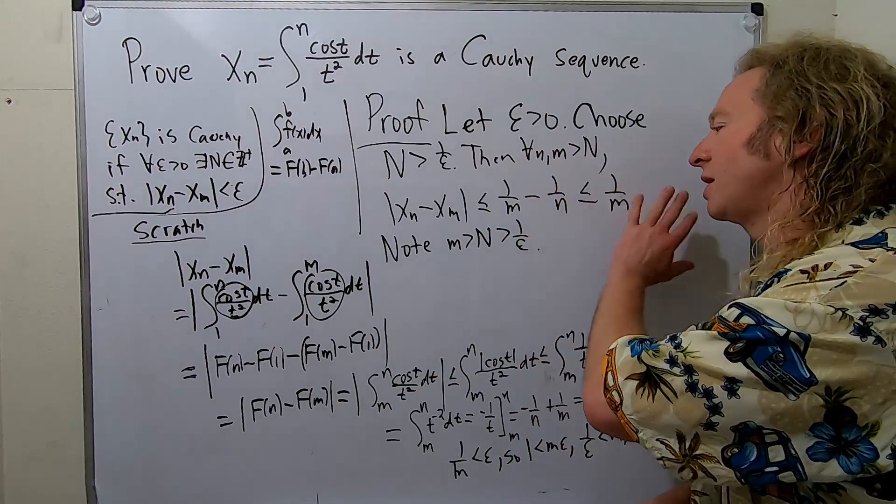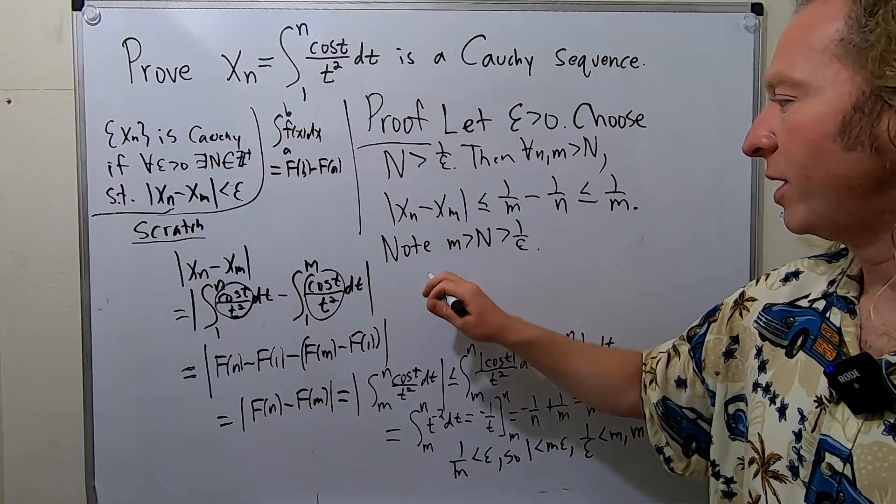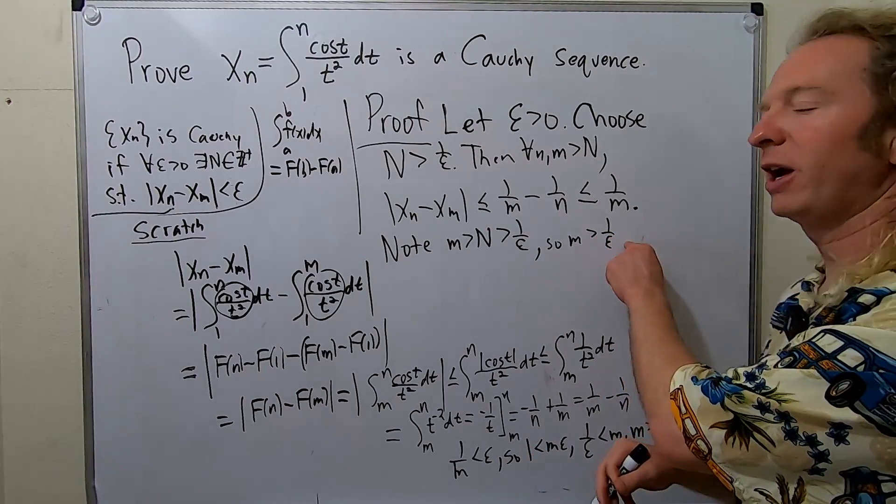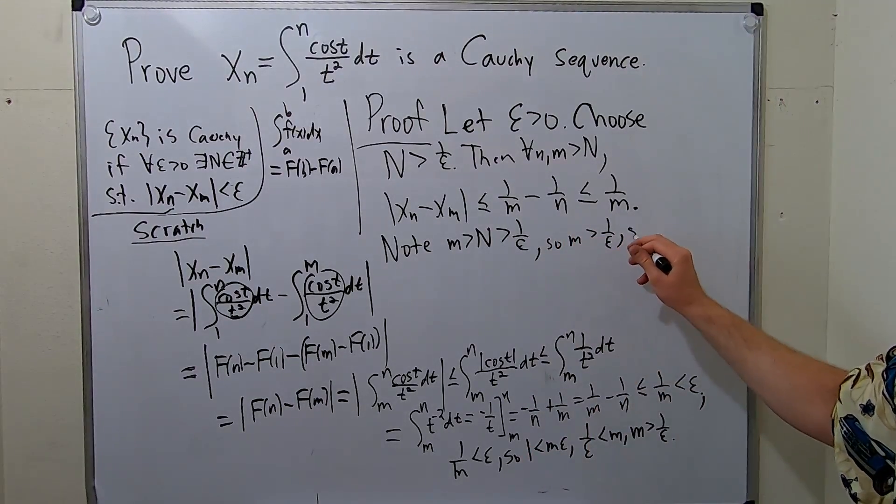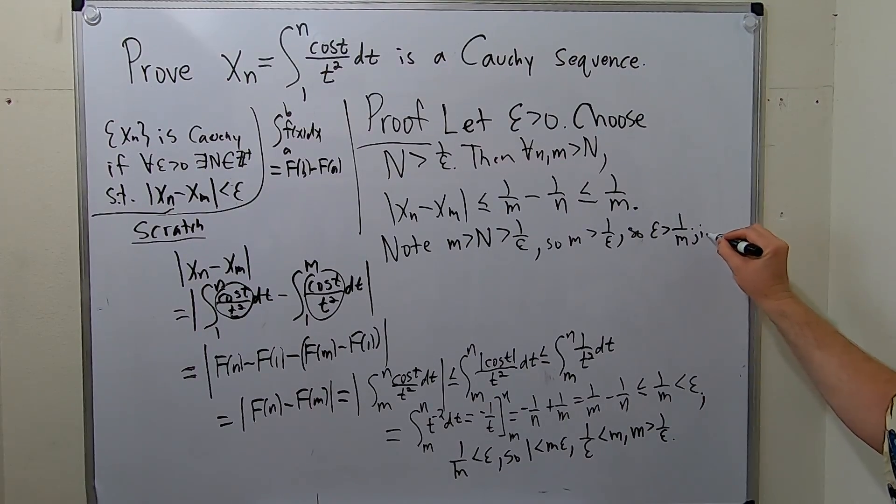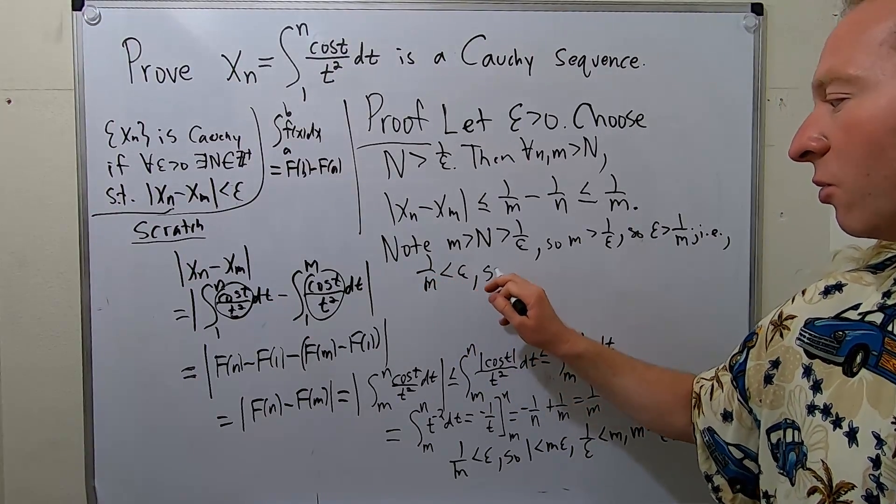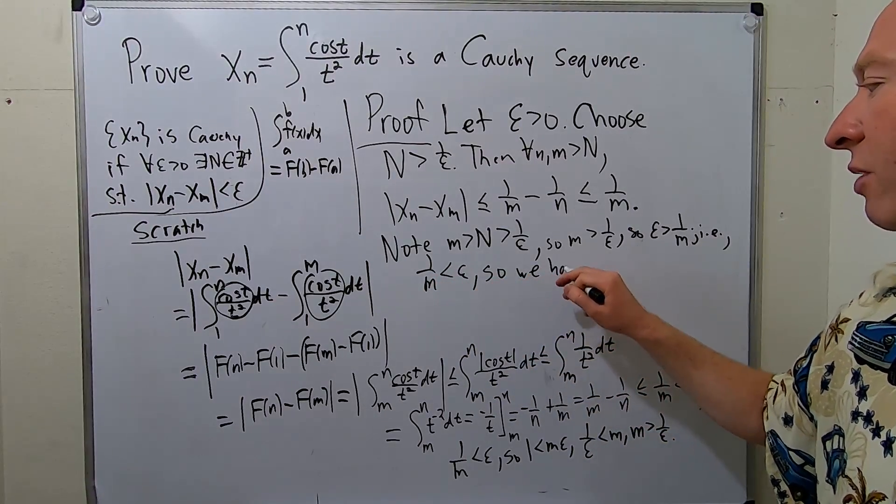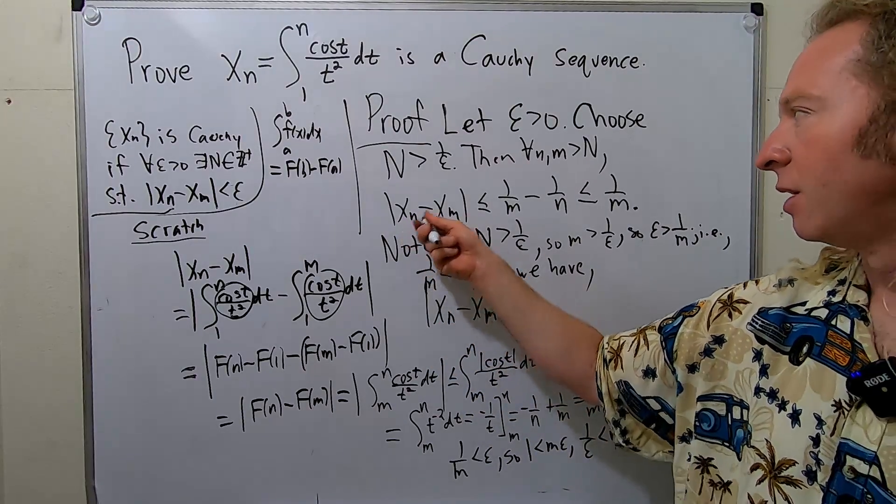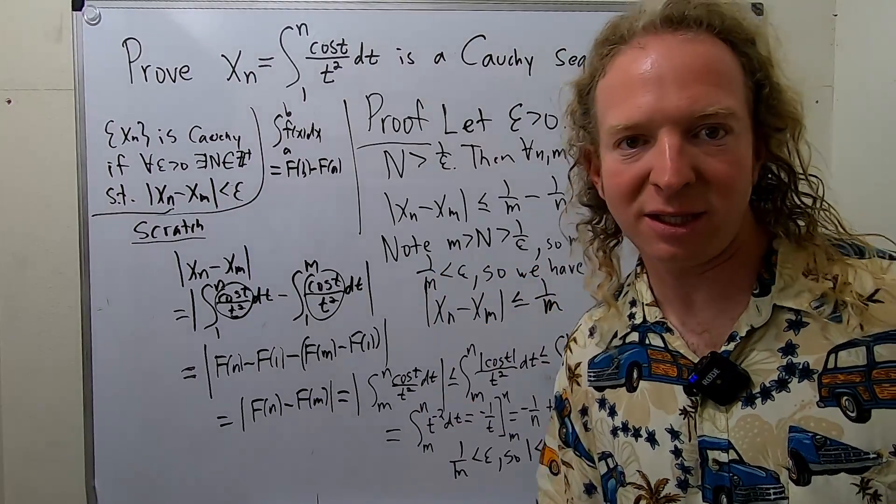So, when you get here, it's not necessary to do it. But I personally think it's good. So, now, we have that m is bigger than 1/epsilon. So, multiplying by epsilon and dividing by m at the same time. That means that epsilon is bigger than 1/m. 1/m is less than epsilon. So, we have, let's reiterate what we just did. |x_n - x_m| less than or equal to 1/m. And we just clarified that that is indeed less than epsilon.